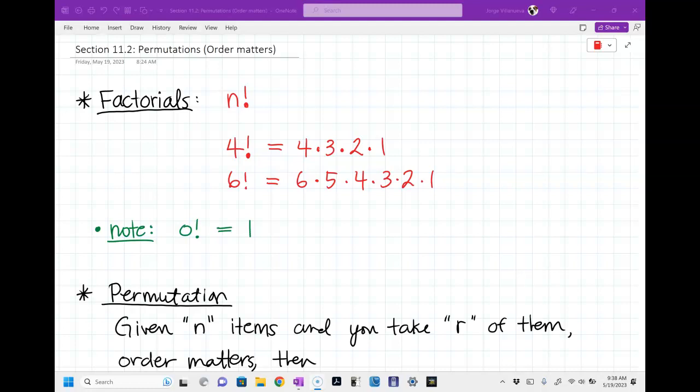If I say, alright, I have all of you here and I'm going to pick three of you guys and the first one I pick is going to make the most money. The next one's going to make okay money. The next one's going to make a little bit of money. Does it matter who I pick first? If you want to make the most money, sure. So with permutations, it matters the order in which we pick stuff.